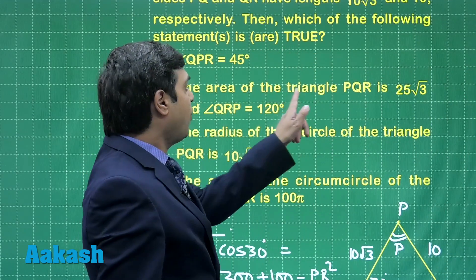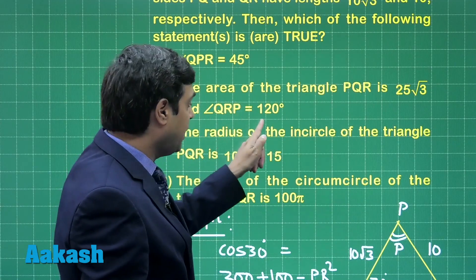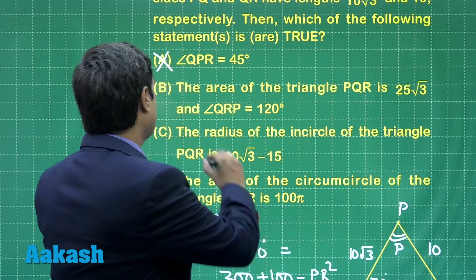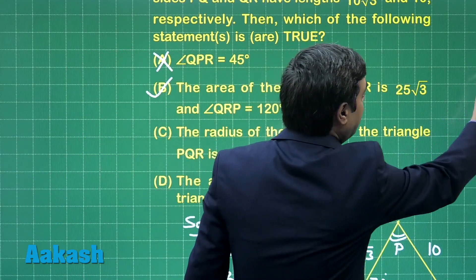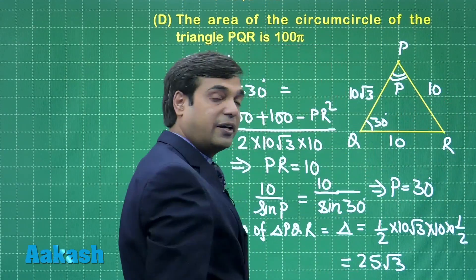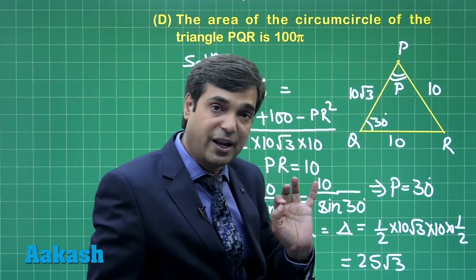The area of triangle PQR is 25 root 3 and angle QRP is 120 degrees. Both terms are correct because we have obtained this angle P as 30 degrees, these 2 are 30 each, meaning this angle is 120 degrees. So this statement is correct.